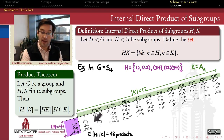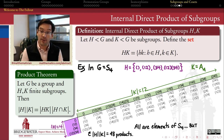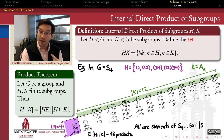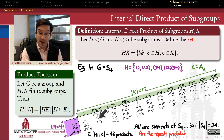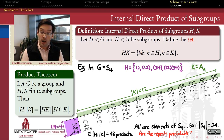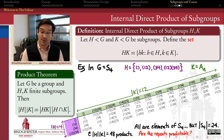When we take a closer look at these 48 products, we first realize that all of them are elements of S4, just by closure, since all elements of H and K belong to S4. The problem is that S4 only has 24 elements, but there are 48 products in this table, so there must be some doubles. The question is: are those doubles predictable? Does every single element of S4 appear in this table exactly twice?